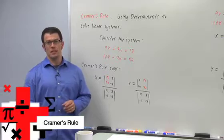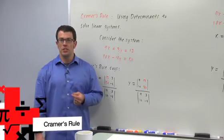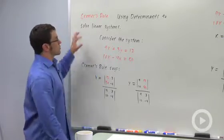One neat thing you can do with determinants is solve systems of linear equations with them, and the method's called Cramer's Rule.